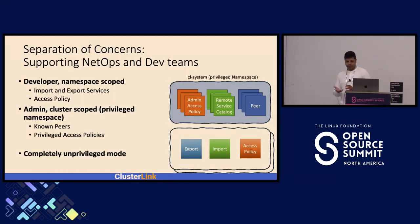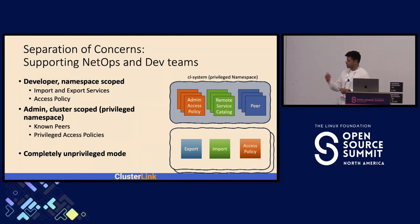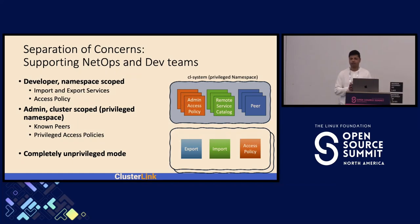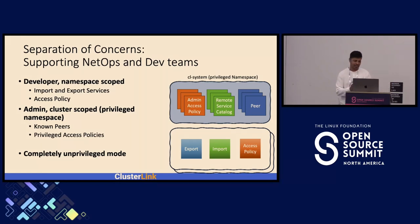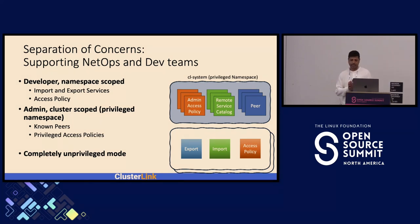In terms of deployment, ClusterLink supports both NetOps and DevOps teams by keeping their concerns separate. Regular operations like importing and exporting a service and defining who can access the service are maintained by developers in their namespace scope. Administrators still have control over which clusters can be paired together and have privileged access policies, which are organization-scoped and can veto regular policies. Additionally, ClusterLink supports a completely unprivileged mode where gateway components are deployed in the developer's namespace with no administrator involvement.